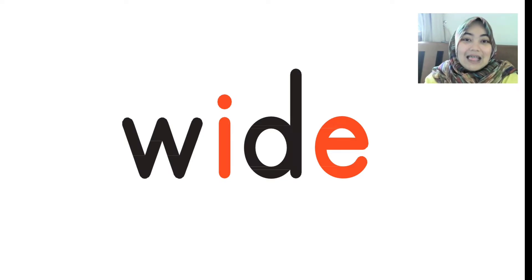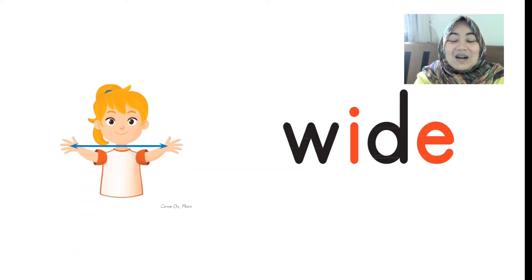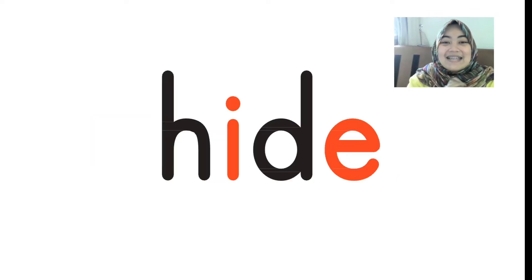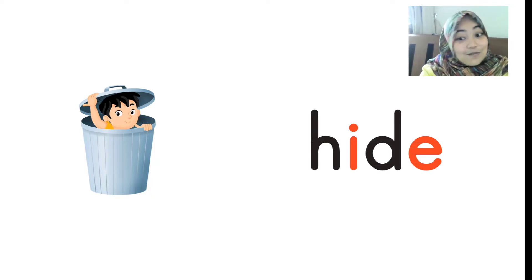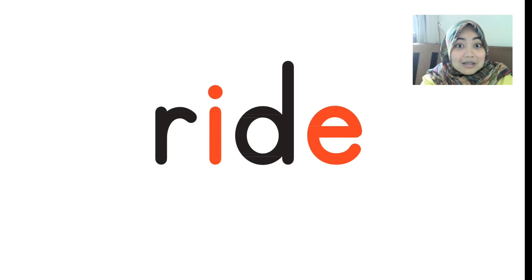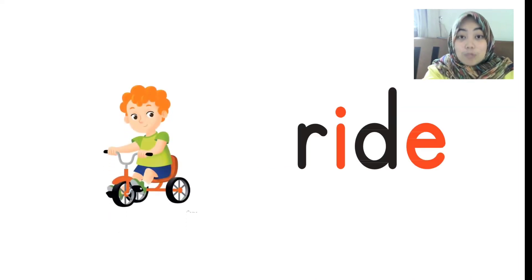Let's try and guess the next one. Still with the same phonics — I-D-E, with W in front. Wide. Good job, yes it is — wide. Next, still the same phonics I-D-E. Hide. Well done. Look at that boy — he's hiding in the trash can. Hide. Let's continue. Ride. Well done, yes it is — it's ride. Ride.